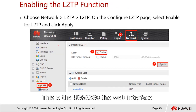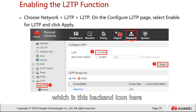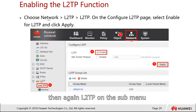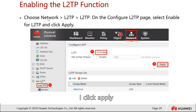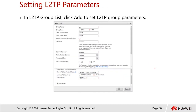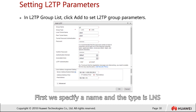Now let's look at the steps on the USG 6330 web interface. The first step is to go to Network, which is the large icon shown here, then select L2TP, and then L2TP again on the submenu. In step 3, we check the box to enable the L2TP service, then click Apply.